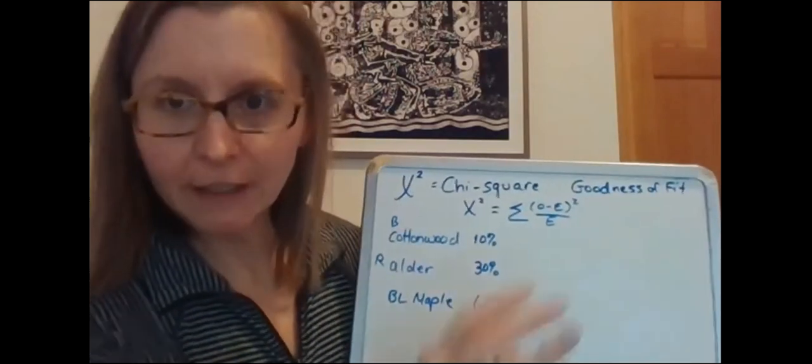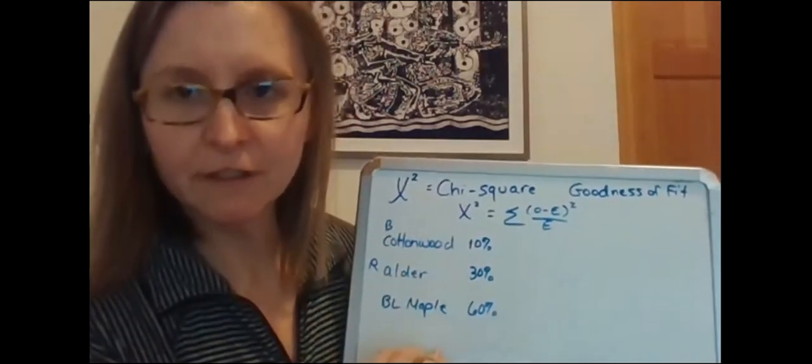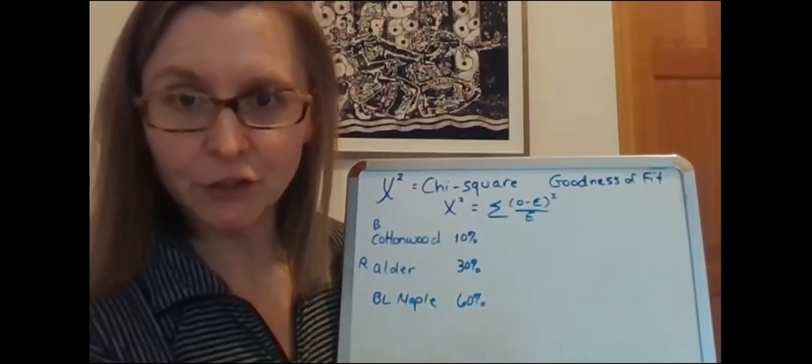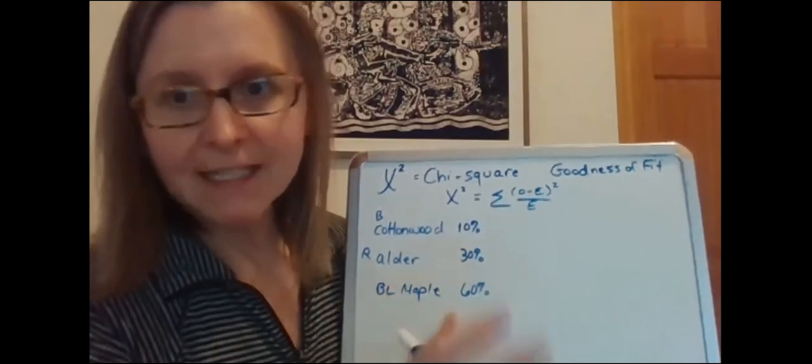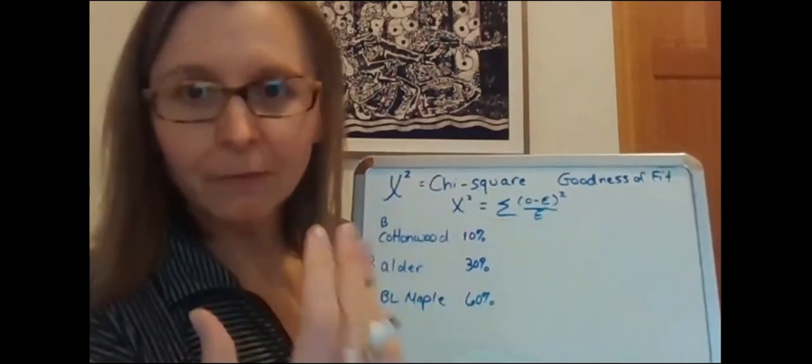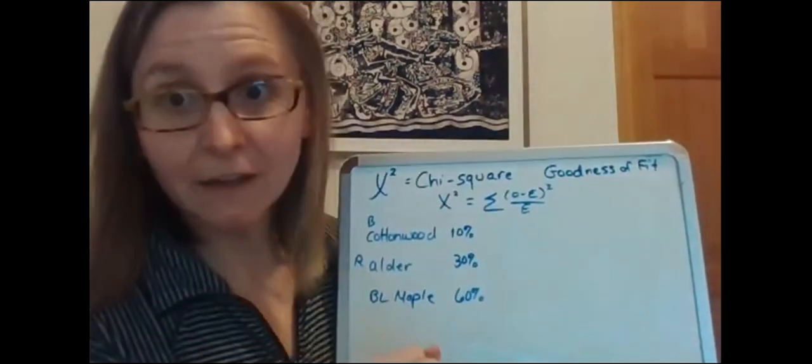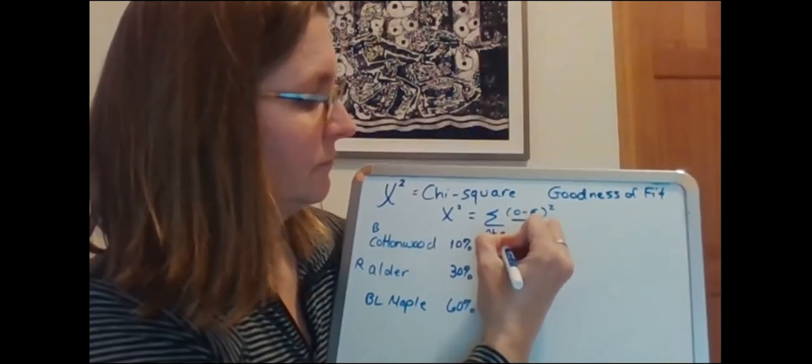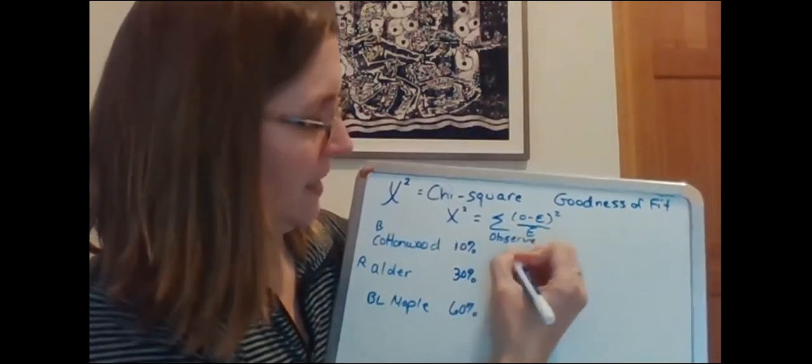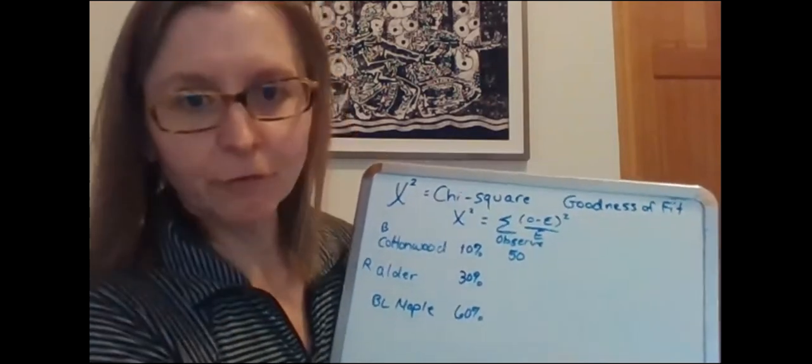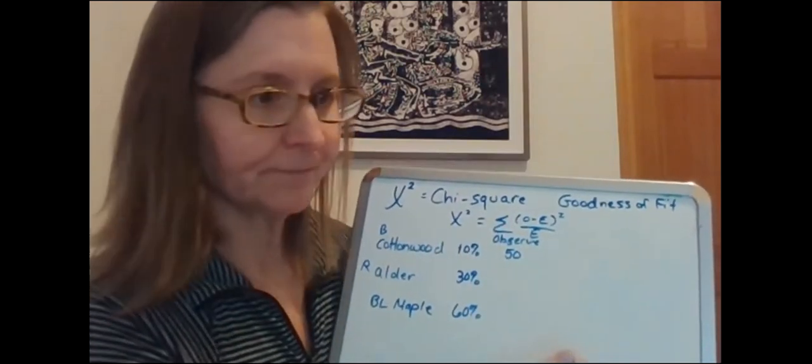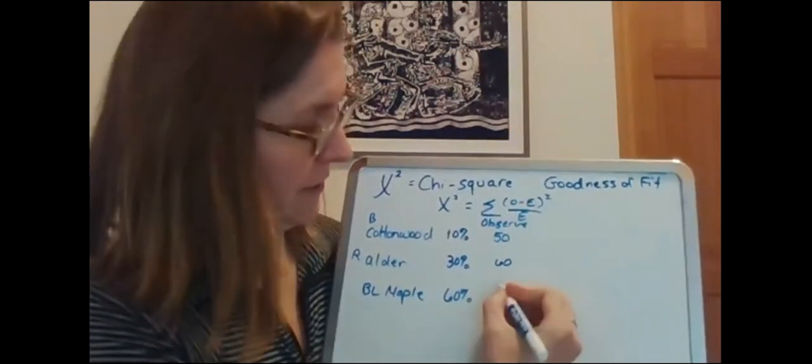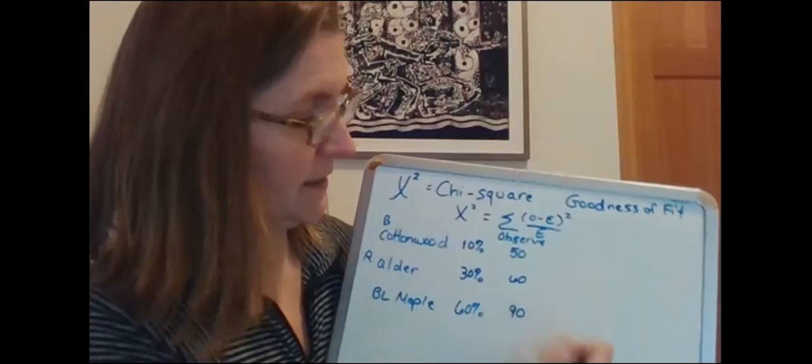I then go and I go to lots of different trees in each one of these groups and I do timed observations and I look to see birds visiting and feeding on these trees. So I standardize things by timing my survey and also I make sure I'm replicating myself by visiting lots of different trees and this is what I observe. I observe 50 foraging visits to cottonwoods, 60 visits to alder, and 90 to big leaf maple.